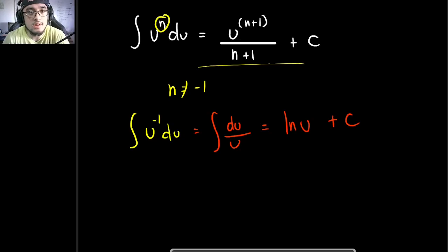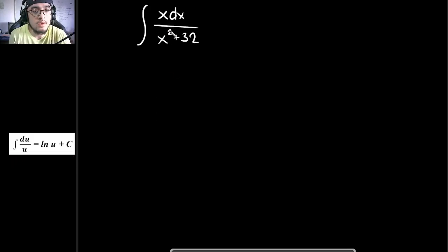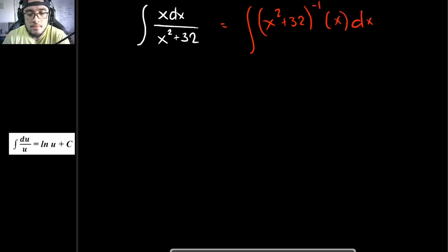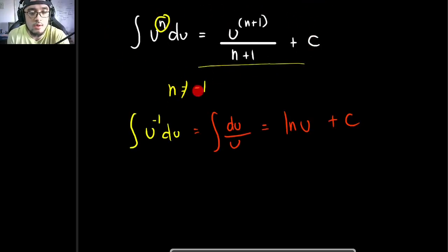Let's have an example for you to understand it better. As you can see in the lower left part of your screen, this is the general formula for the logarithm function of our integral. We will solve this example and check if we can use this formula instead of the power formula. This can be rewritten as the integral of x squared plus 32 raised to negative 1 times x times dx. As you can see, the exponent is negative 1, so we cannot use the power formula since n equals negative 1.